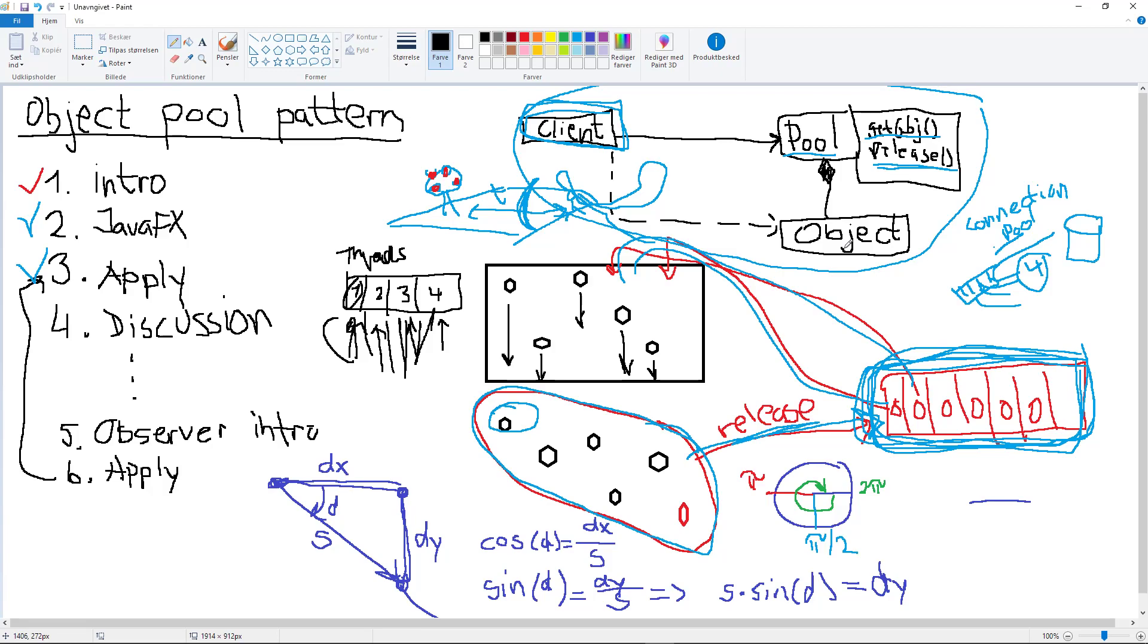Whenever you have something that is expensive like creating images or something like that, you would want to use object pooling. It's very much used in things like games where you need efficiency.